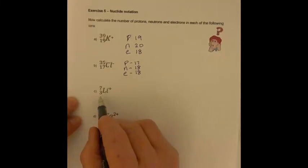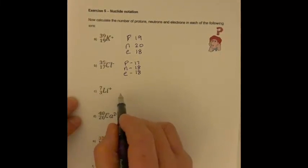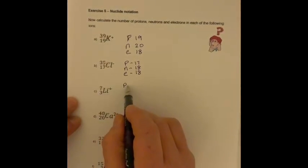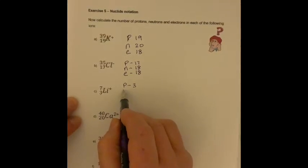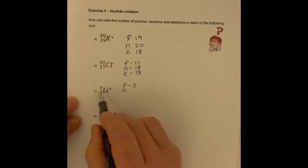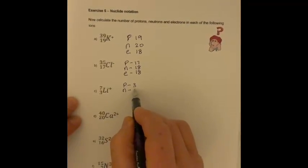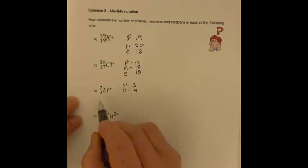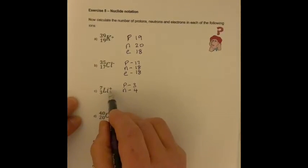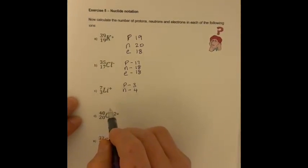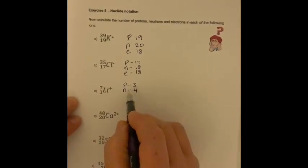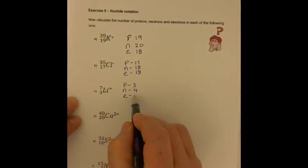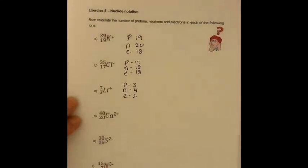Lithium — we can see at the bottom here the atomic number is 3, so the number of protons is 3. Number of neutrons is 7 minus 3, so it's going to be 4. We can see it's got a positive charge, so therefore there must be one more positive than negative. Therefore, we must only have 2 electrons.